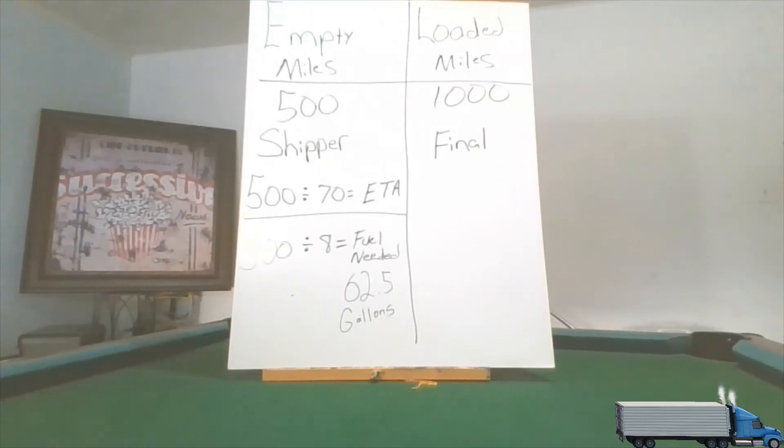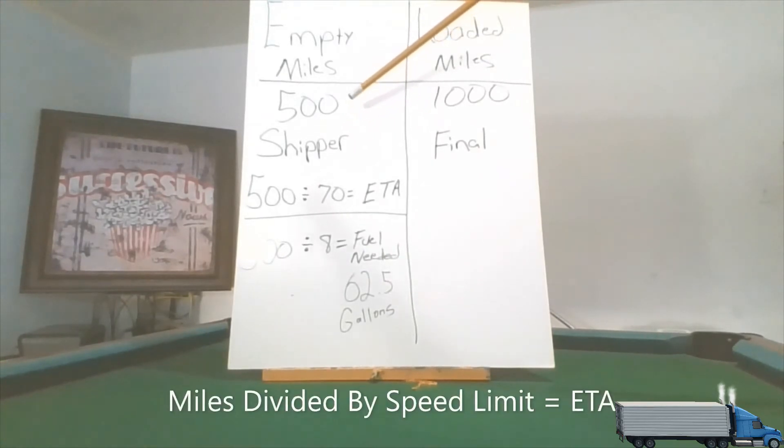So let's tackle today. 500 miles to the shipper empty is what you were when you got the assignment, and you are 500 miles away from the place where they want you to go. If you want to find out your estimated time of arrival, you want to take the 500 miles that you're going to be traveling today and divide it by the speed limit. I put 70, but the speed limit could be 75, or if your truck is governed the fastest you can go is maybe 60.